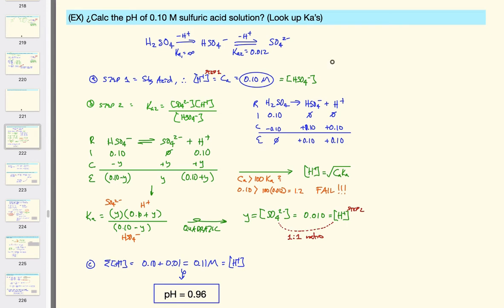Look at another one. Calculate the pH of a 0.1 molar sulfuric acid solution. First thing we know is we're given molarity. Next thing we know is we have a polyatomic acid, H2SO4. How do we solve this? We get the H-plus for step 1, and we get the H-plus for step 2.